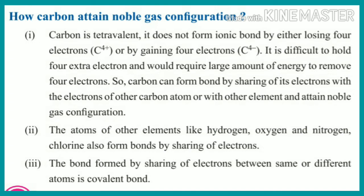How does carbon attain noble gas configuration? Carbon is tetravalent — tetra means 4 — meaning it has 4 electrons in the outermost shell. Carbon does not form ionic compounds by either losing 4 electrons or gaining 4 electrons, because it is difficult to hold 4 extra electrons, and it would require a large amount of energy to remove 4 electrons.